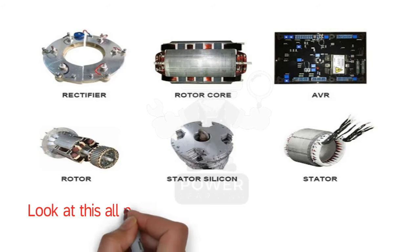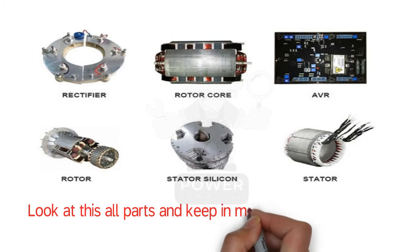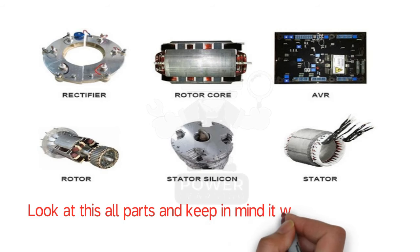Here you will see the rectifier plate, which is also called the diode plate. After that, number two is the rotor core, number three is the AVR, number four is the complete rotor, then the plates from which stators are made, and here is the stator. This is very important to know and understand about alternators — keep this in mind, as it will help you in understanding how alternators work.